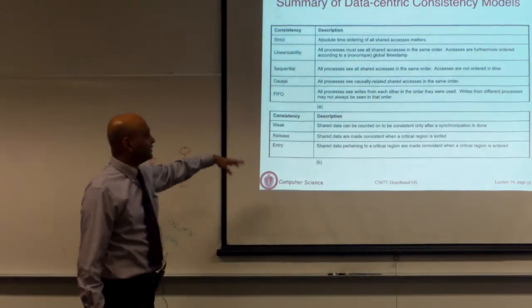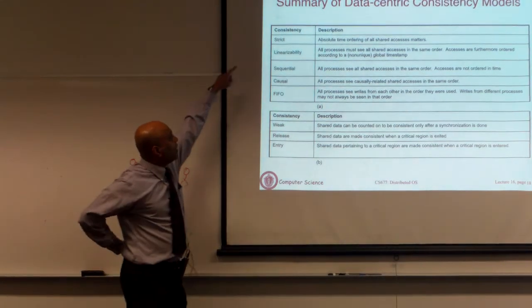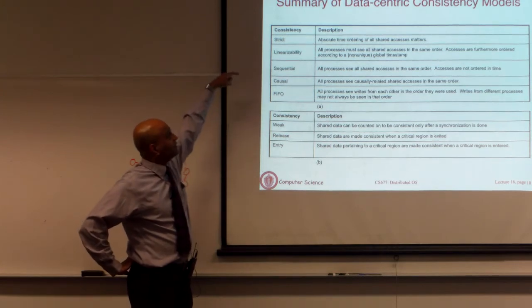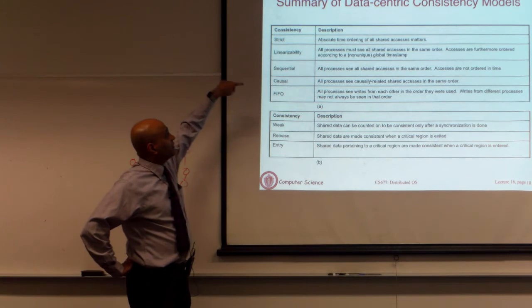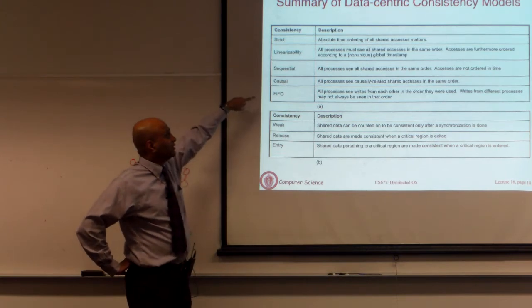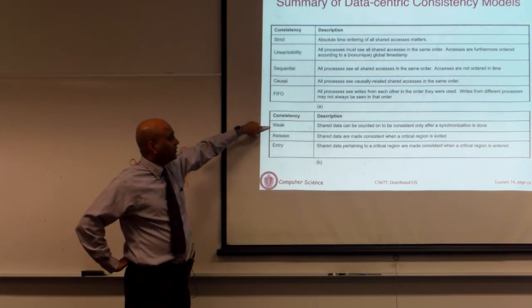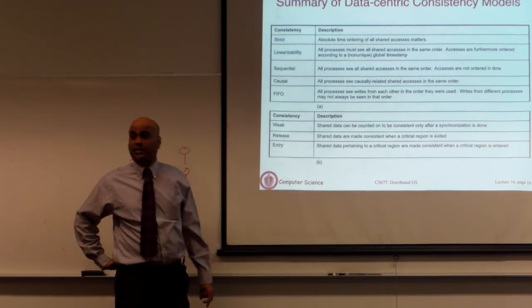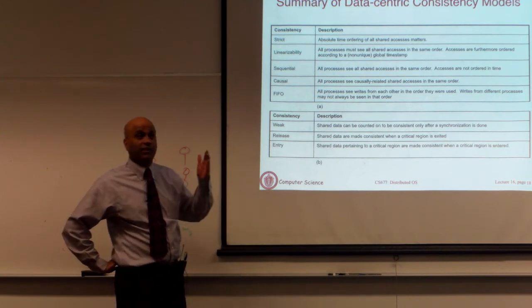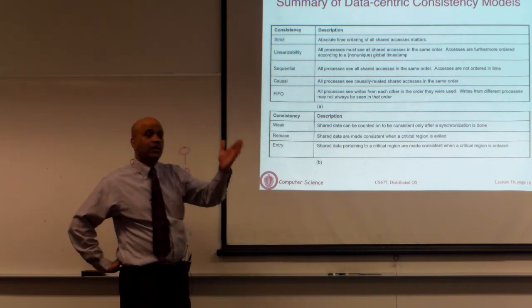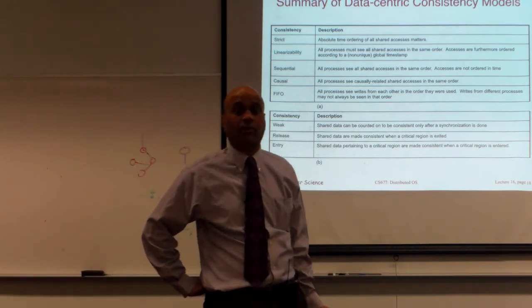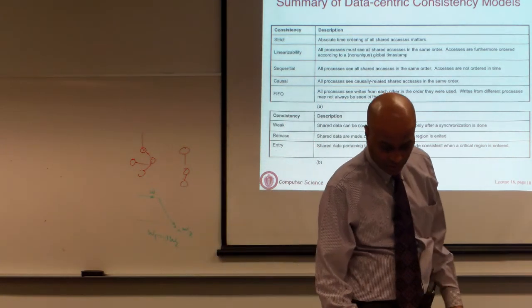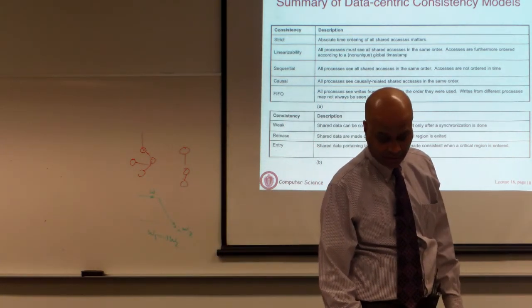Here is a table summarizing everything — roughly in order from strict to weak: strict consistency, linearizability, sequential consistency, causal consistency, FIFO consistency, and then two forms of weak consistency done only at synchronization barriers. This is also called barrier synchronization — all of those other forms are too expensive, so you only enforce consistency at certain points in your execution. These are all data-centric consistency models.